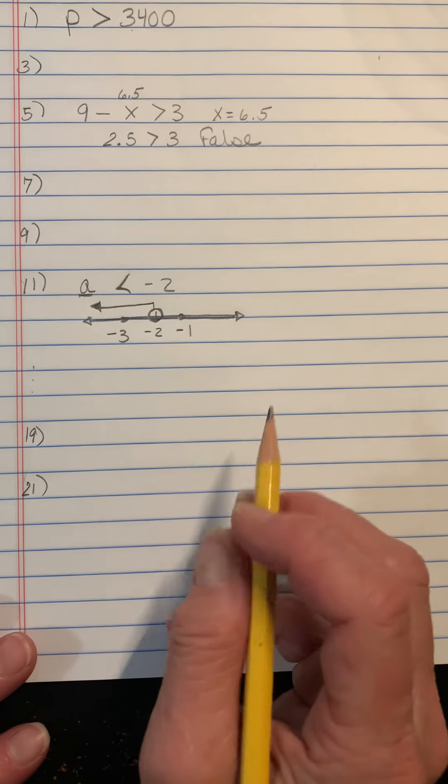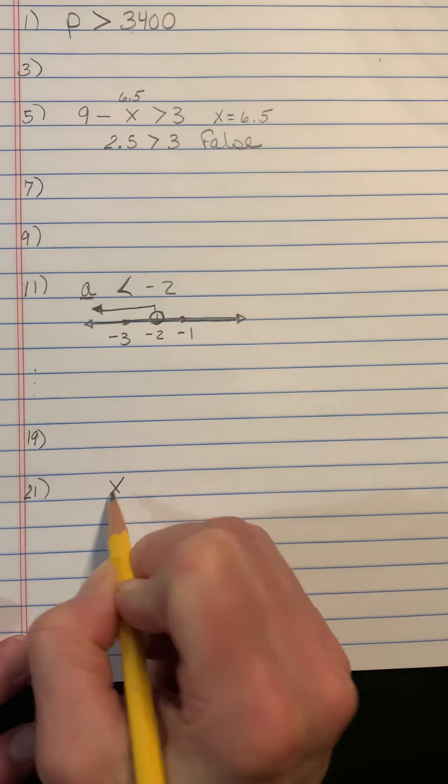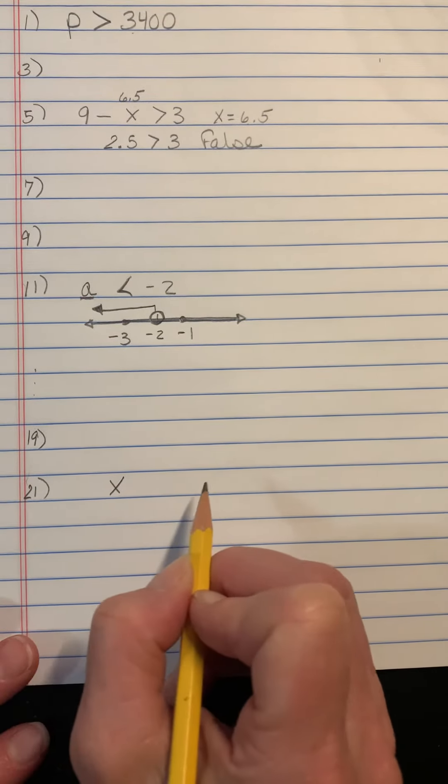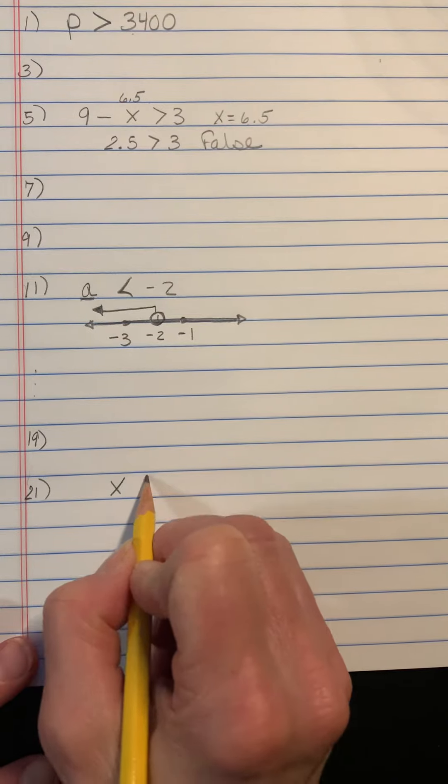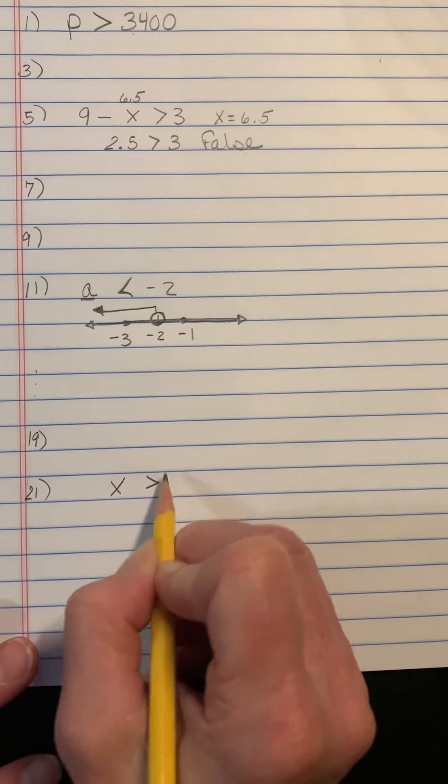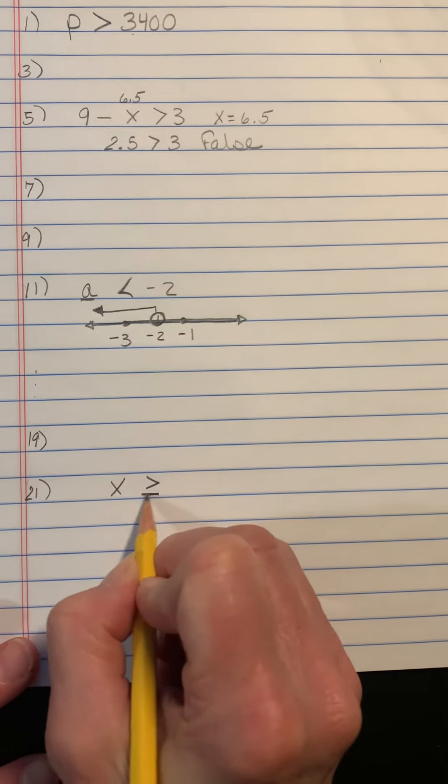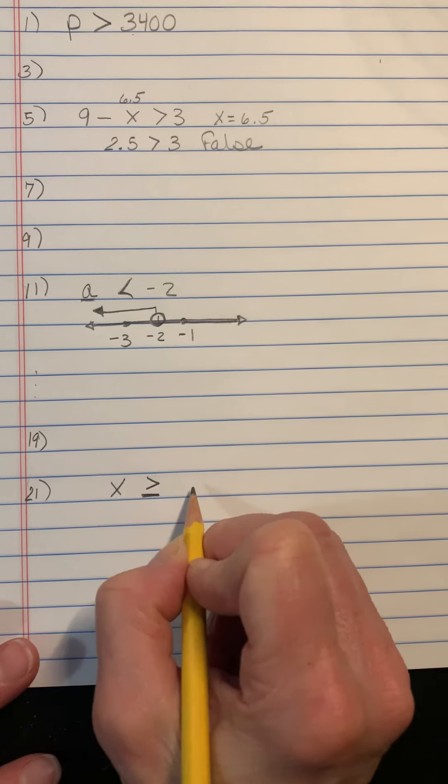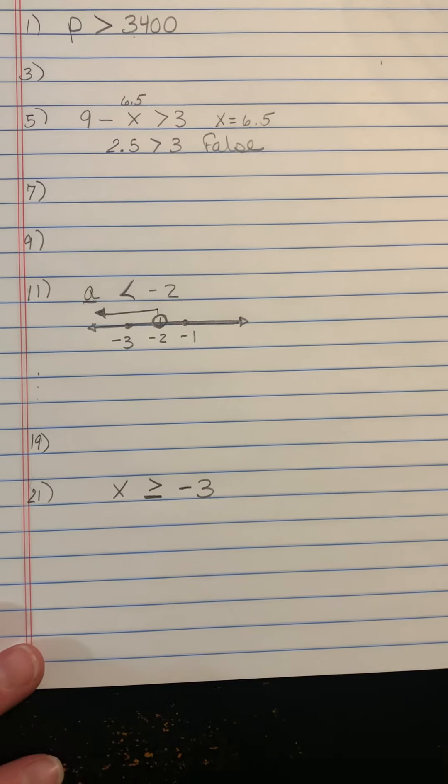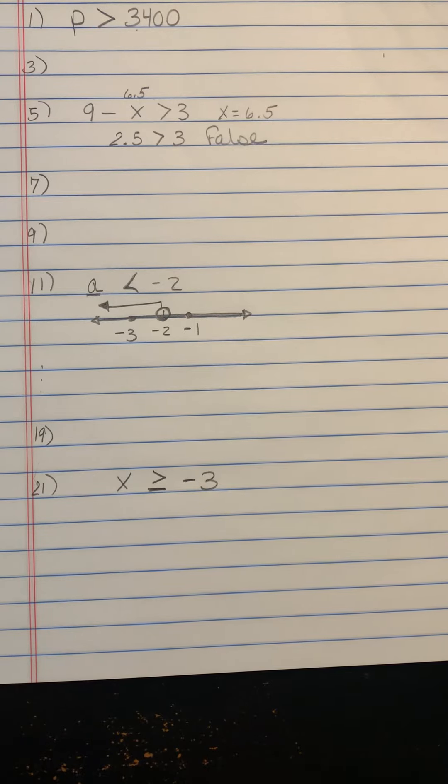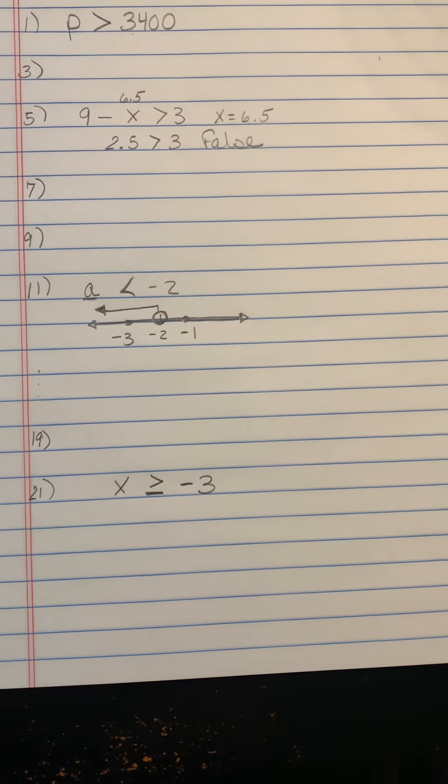So if you look at question number 21, X, everything on the number line is going to the right. So you're going to say greater. The point is colored in. So it's equal to. And then it's at negative 3. So you're going to write the inequality statement. It should be pretty easy. Good luck.